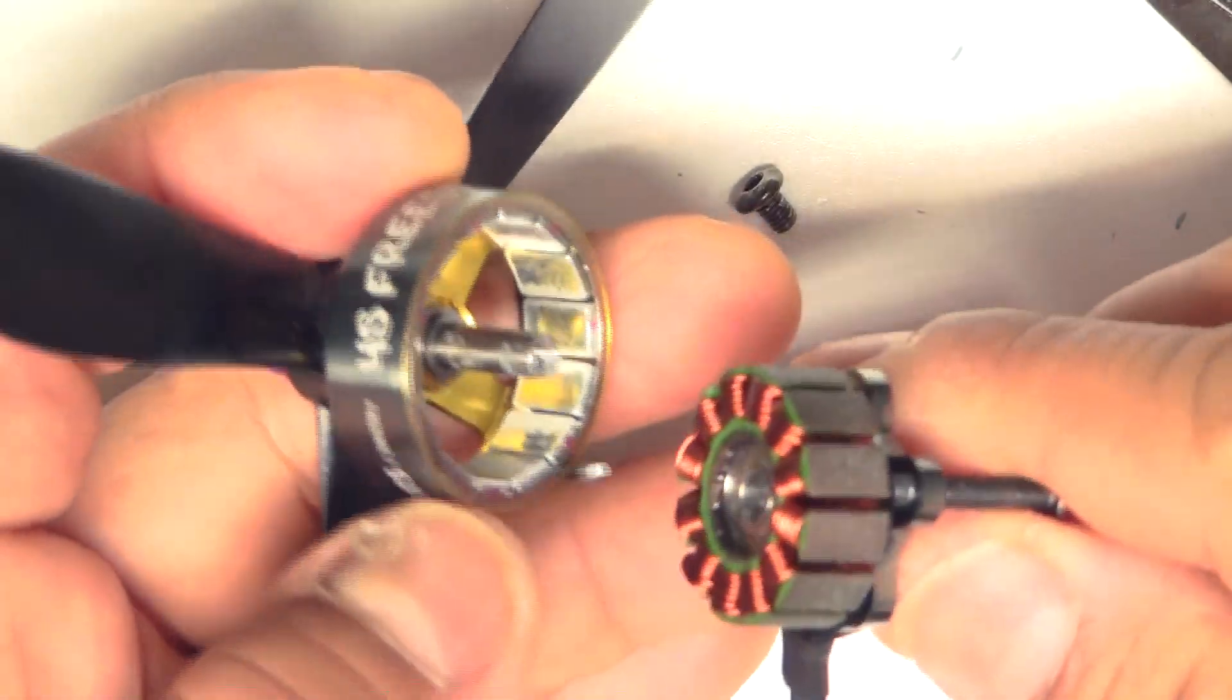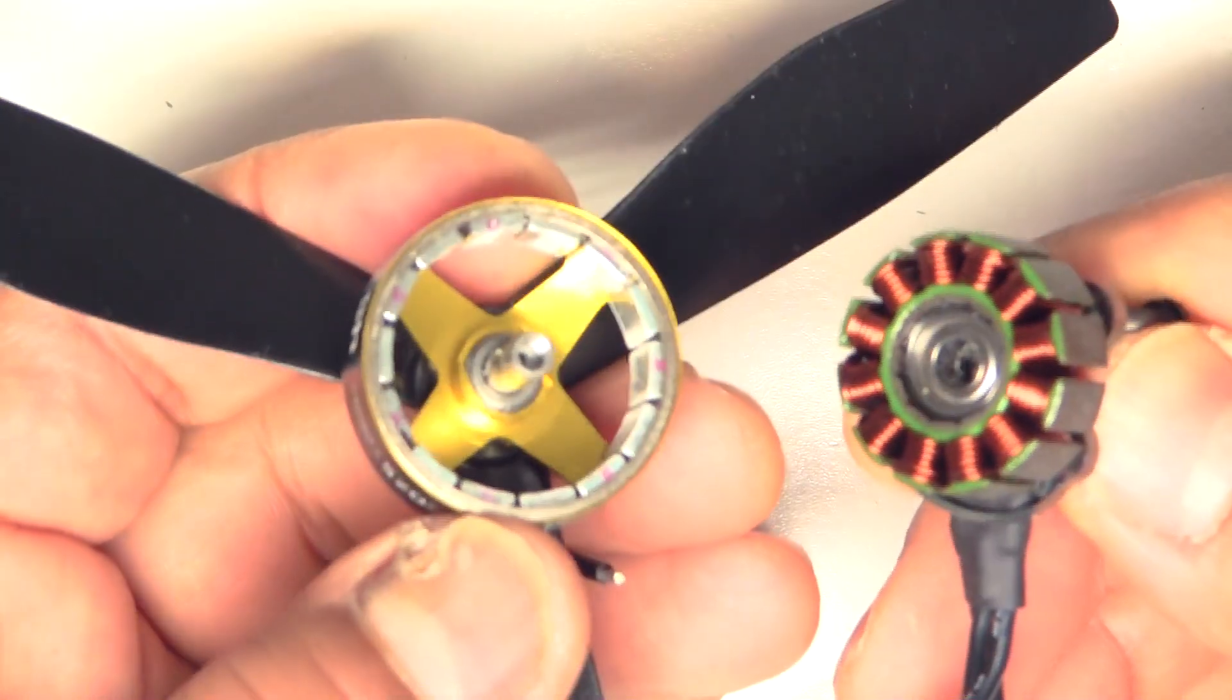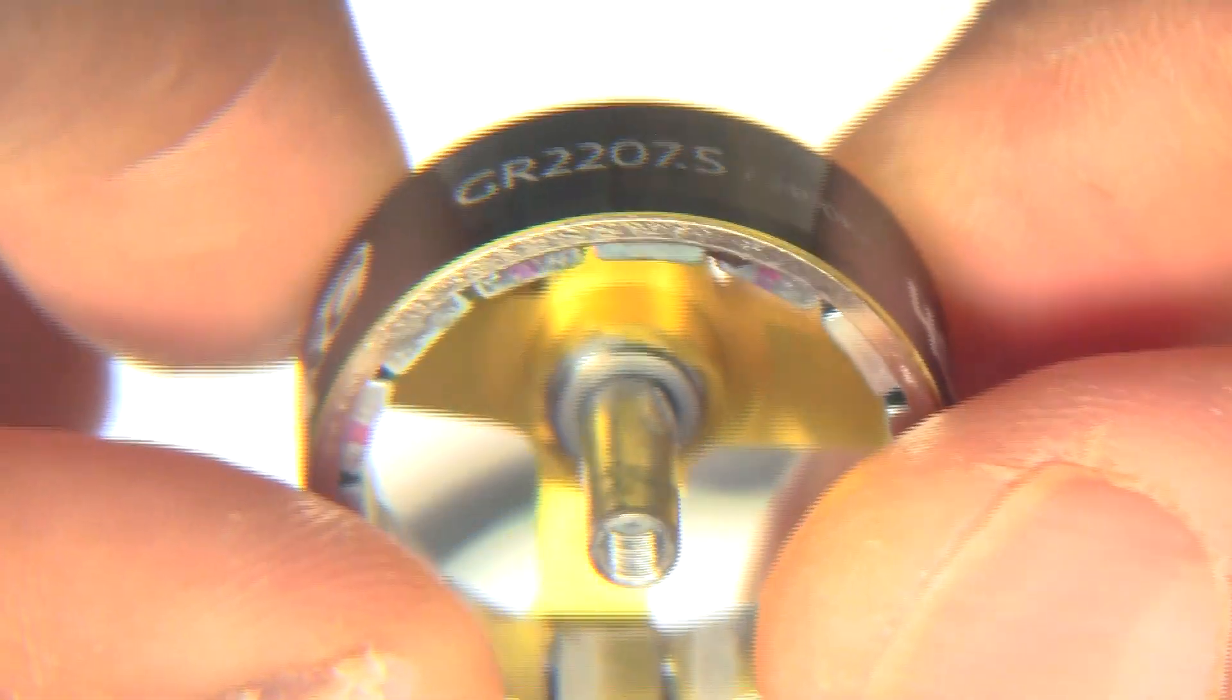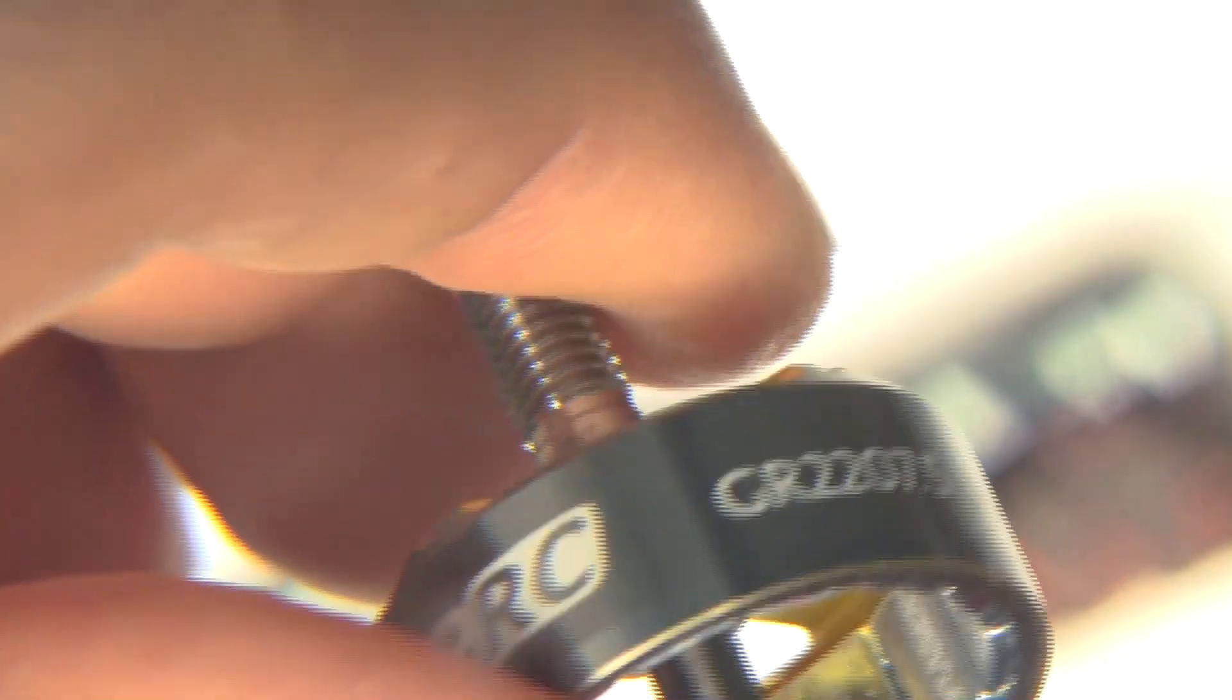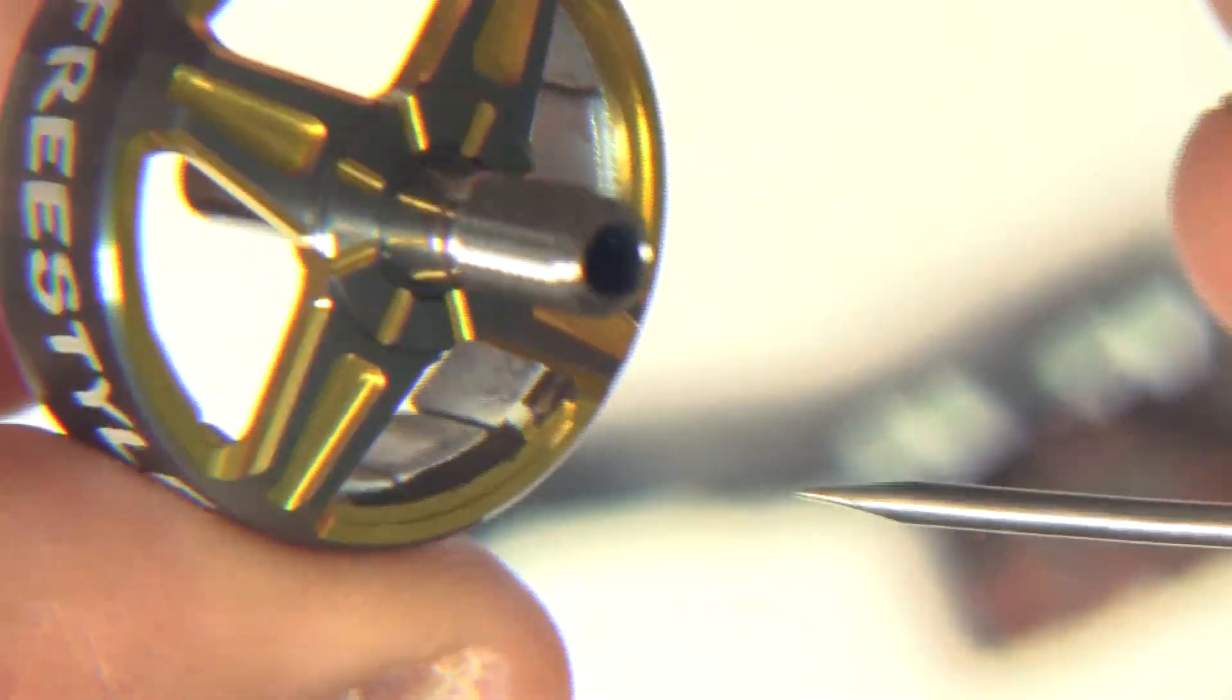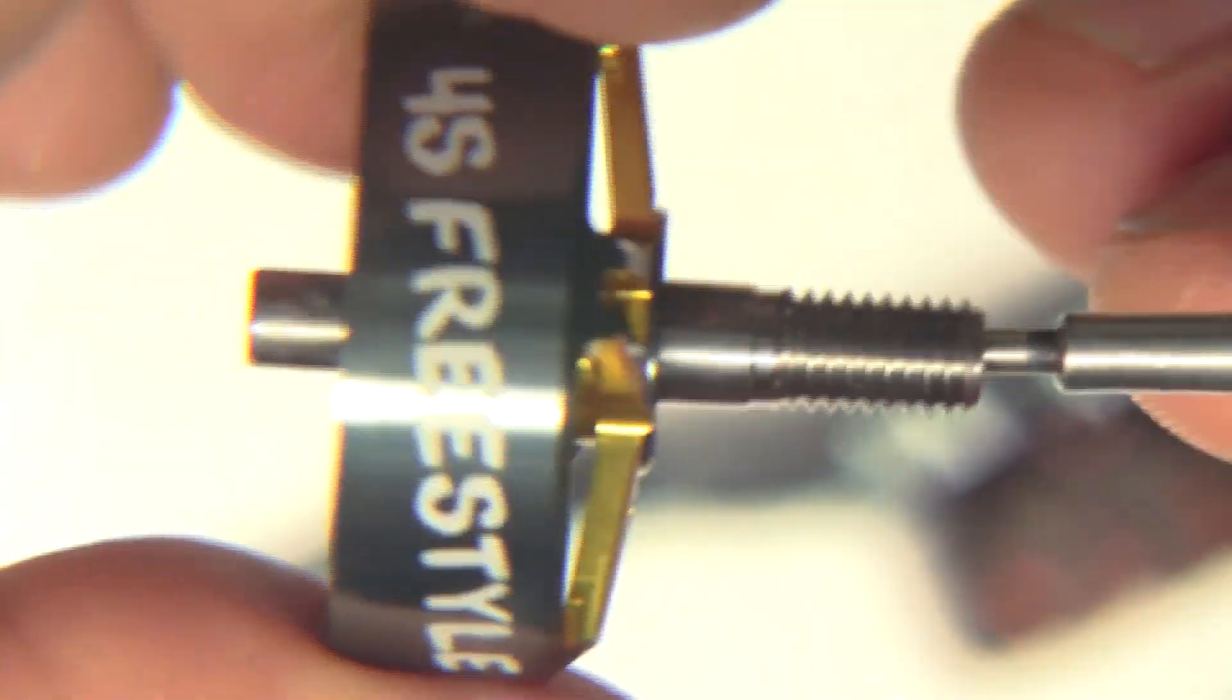All right, so we're going to look at it on the magnifying glass and see some details on this motor. All right, so here's a close-up view of the bell and shaft. The shaft is partially hollow. It's not all the way through. So that's a little bit unusual these days.